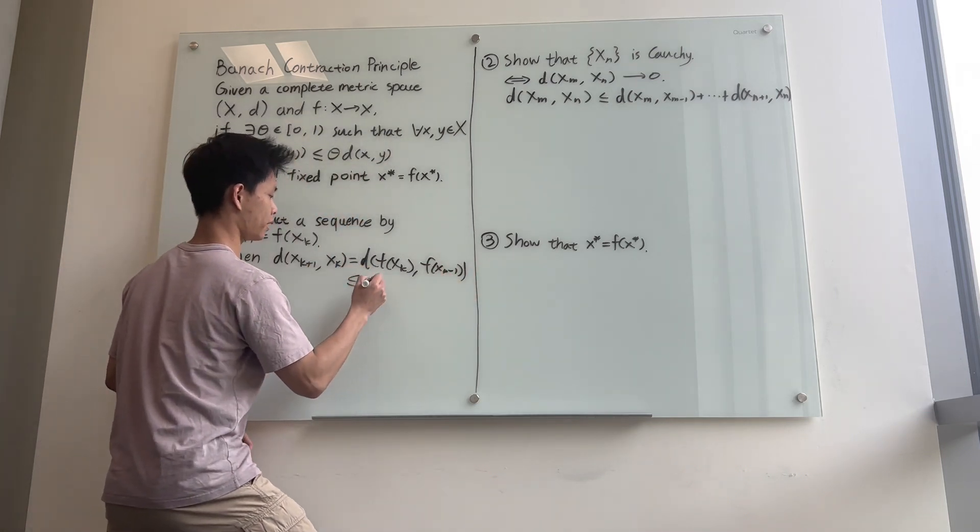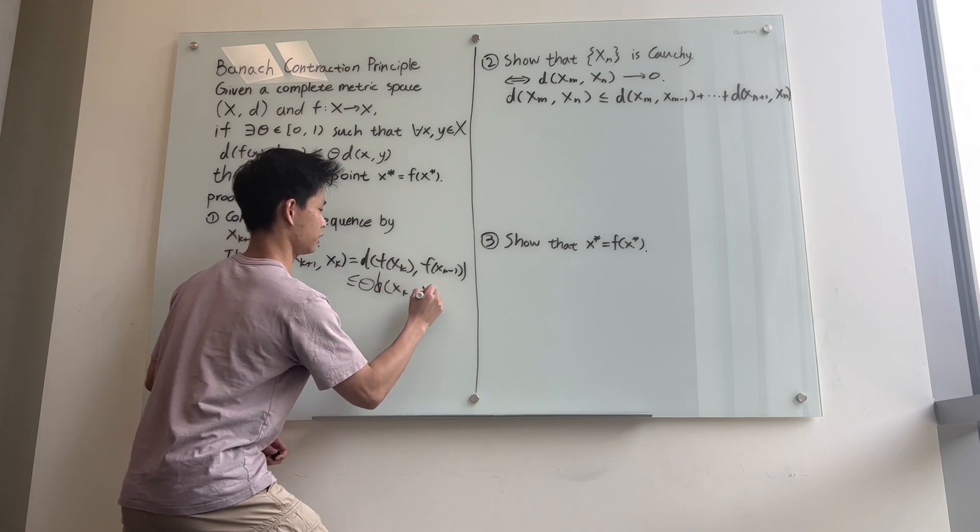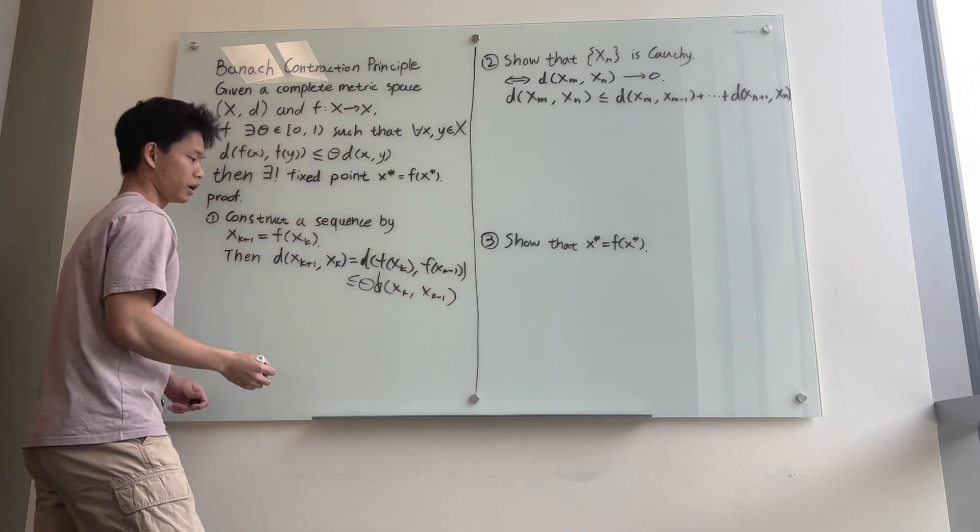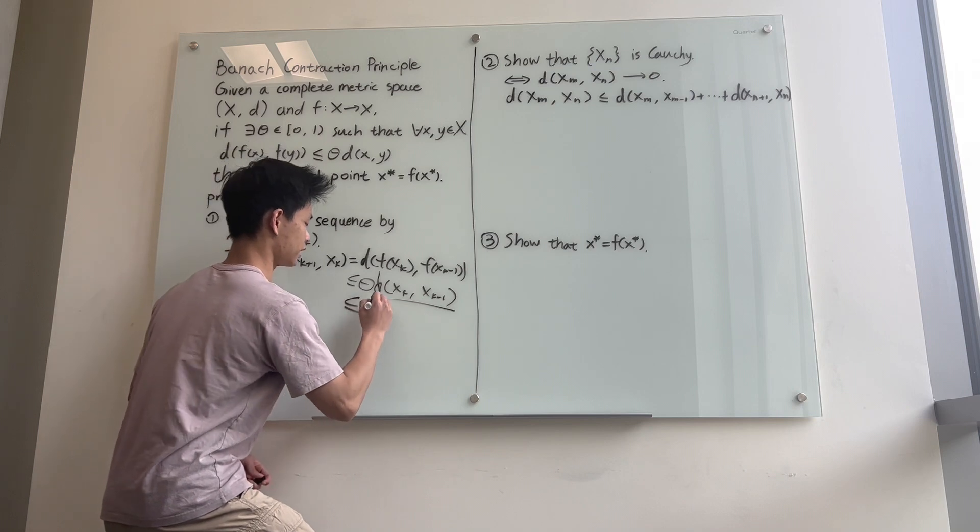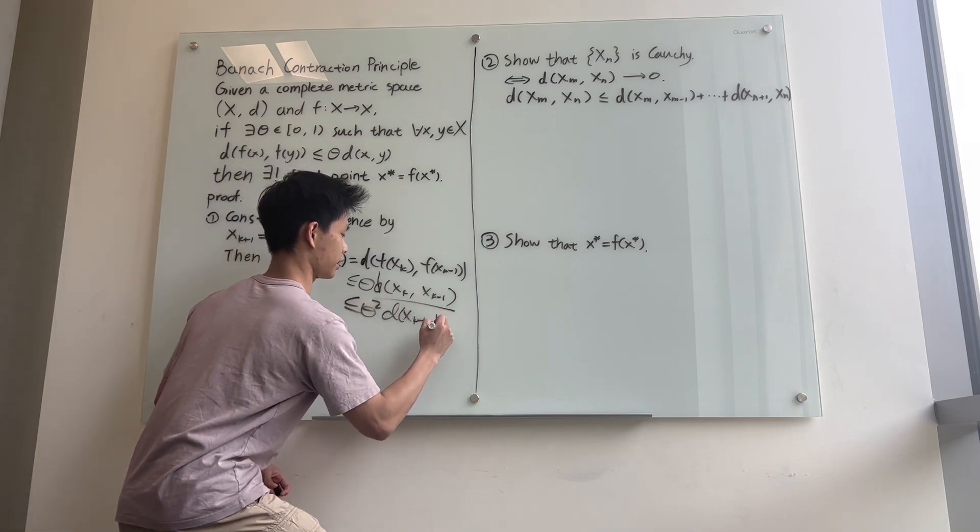And this is less than or equal to, by our hypothesis, theta times d(x_k, x_{k-1}). And now we do the same thing to this term right here. We will get less than or equal to theta squared times d(x_{k-1}, x_{k-2}).